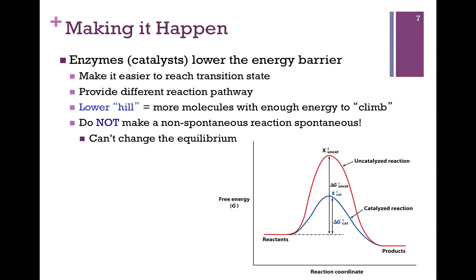All it can do is change the delta G double dagger, that energy hill. And this is what we mean by it can't change the equilibrium. It can't make a spontaneous reaction non-spontaneous, or vice versa. All it can do is make it more likely that the reactants will form the products, that is, it lowers that energy hill.